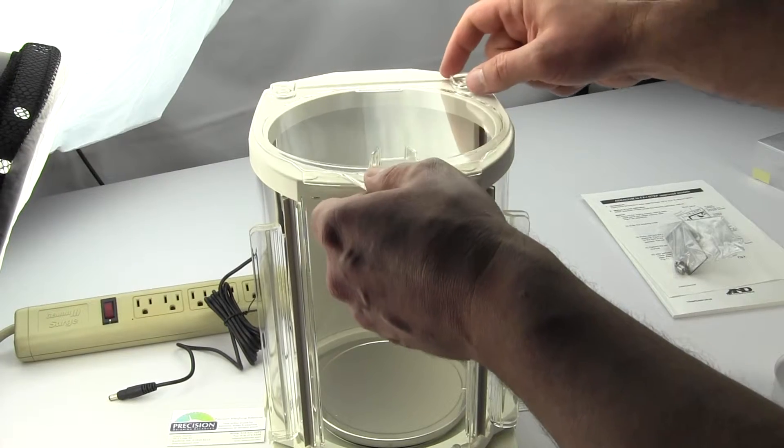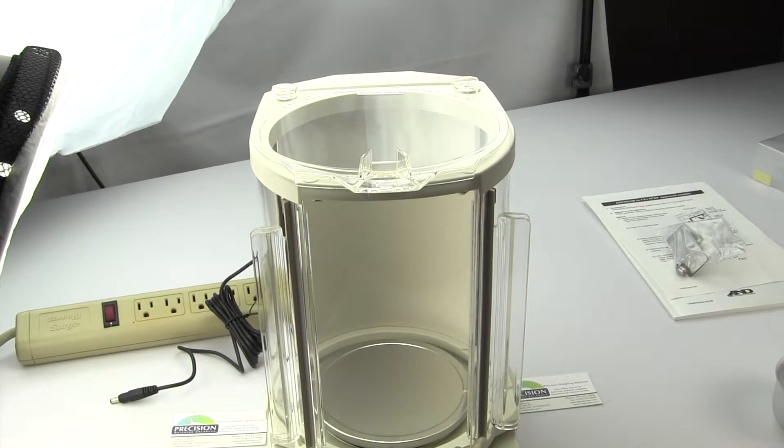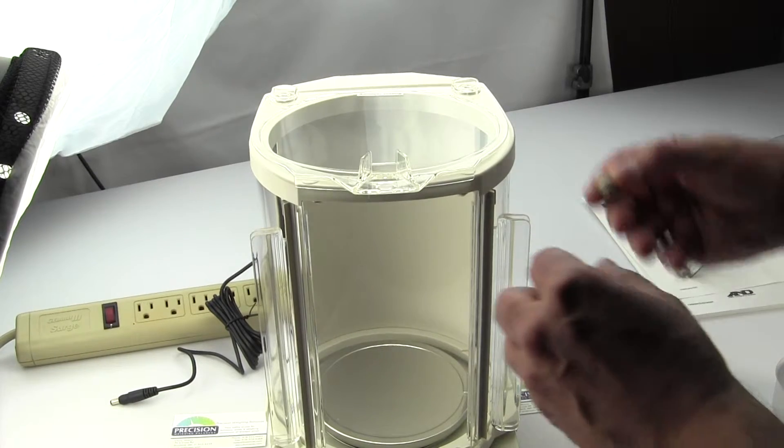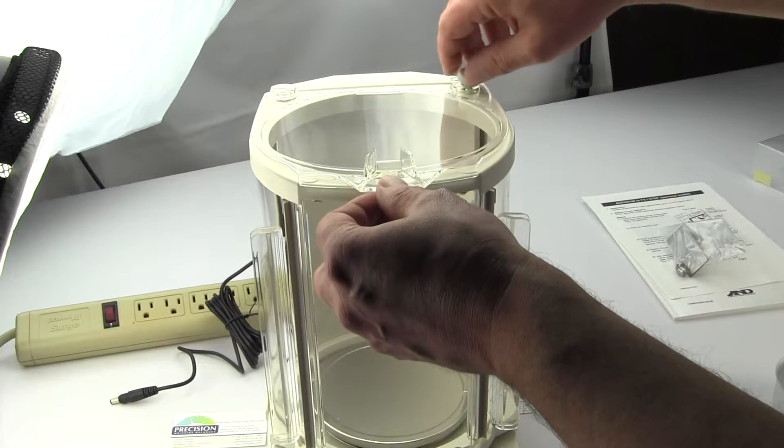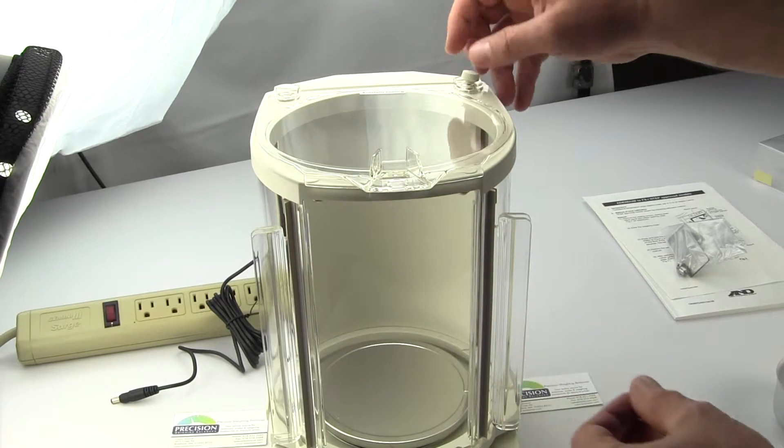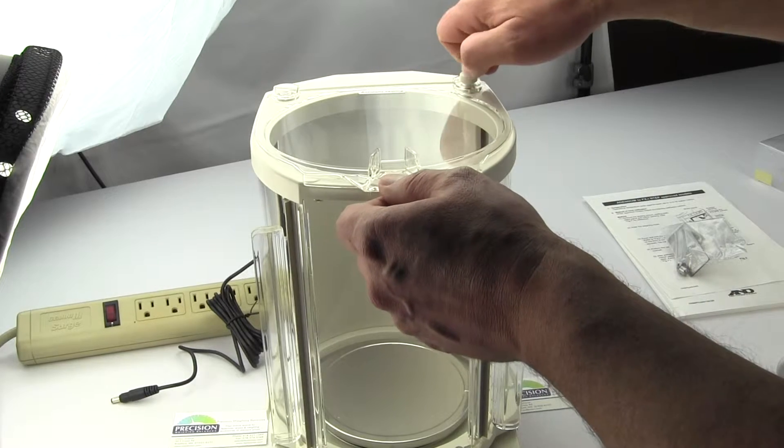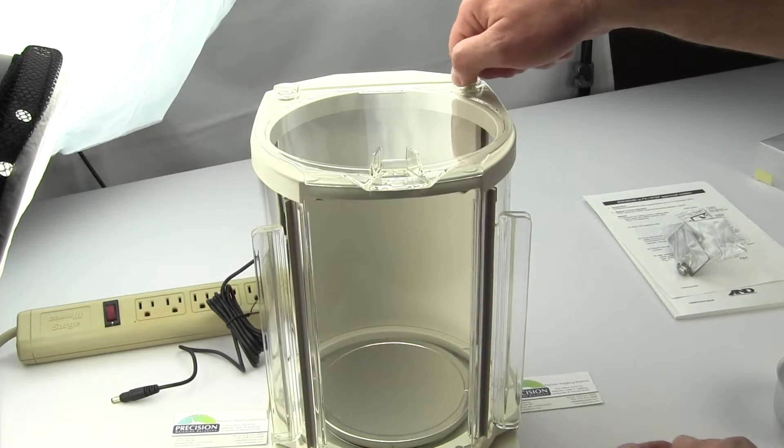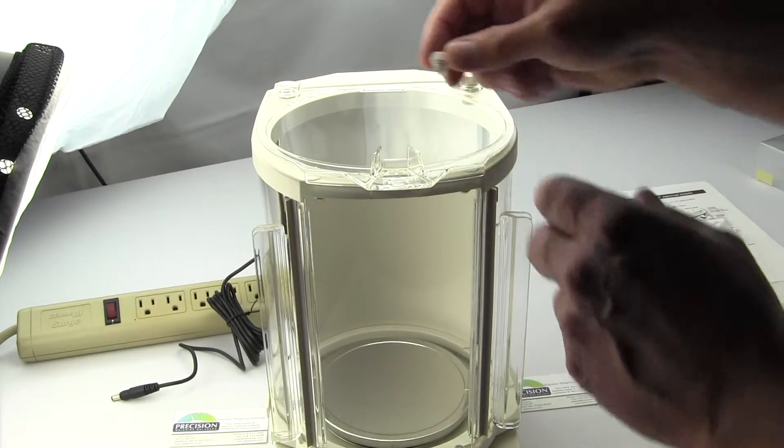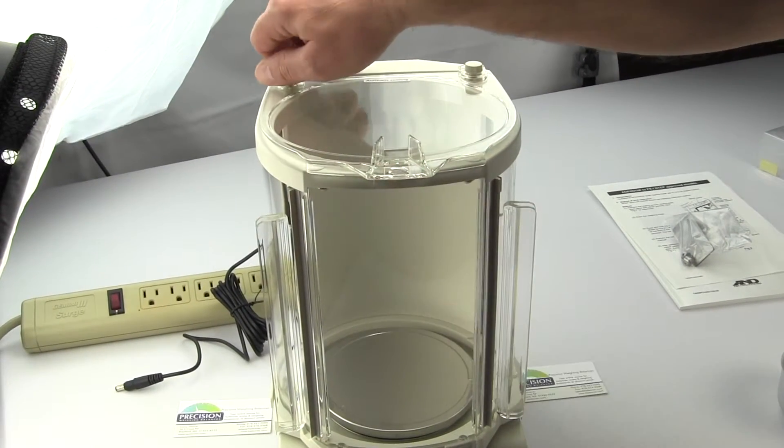One of the benefits with the A&D FXI series versus some other manufacturers, there's glass and they're very nice but they're also very expensive. On many of the balances if you were to break like the back draft shield or the front glass, you have to replace the whole draft shield and that draft shield is going to cost you well over five hundred dollars.